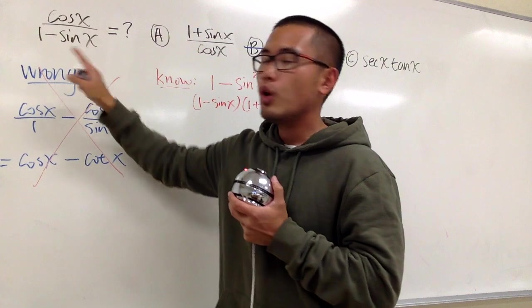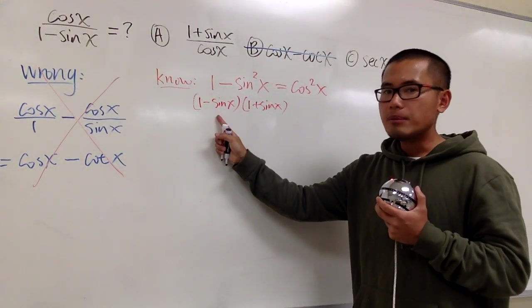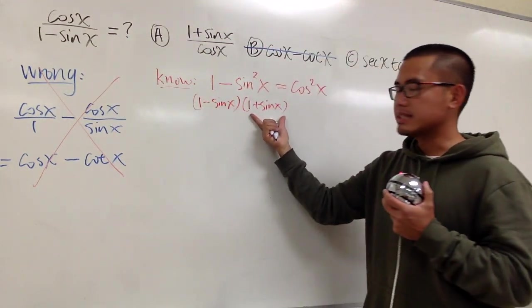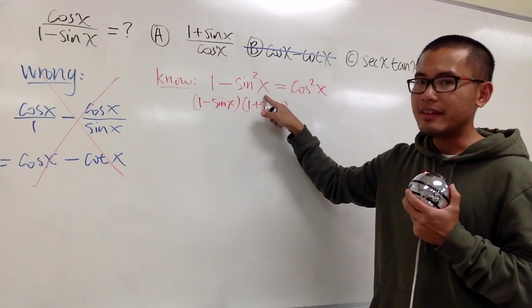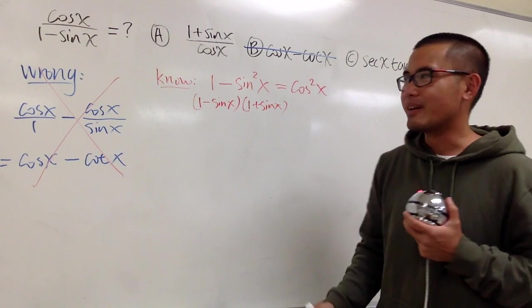Well, if you come back here again, we have the 1 minus sine x already. If I multiply this bottom by 1 plus sine x, we can produce 1 minus sine square x. And in that case, we can produce cosine square x. And we can go from there.